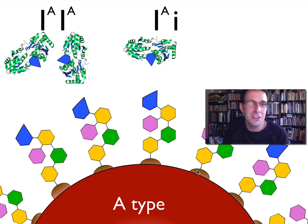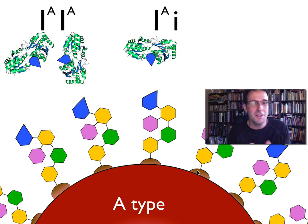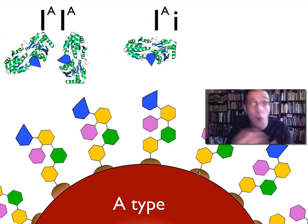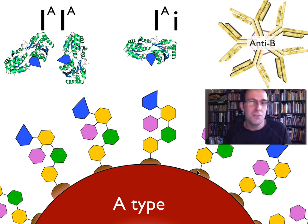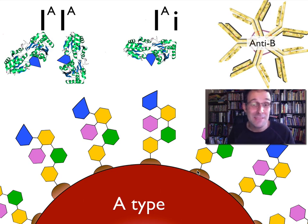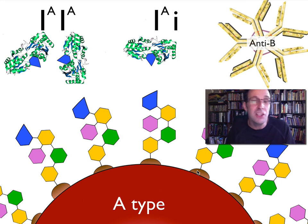Now it's also important to know that because these molecules are fairly common in nature, if you have A-type blood, your immune system will naturally produce anti-B antibodies. And a lot of people don't realize this.